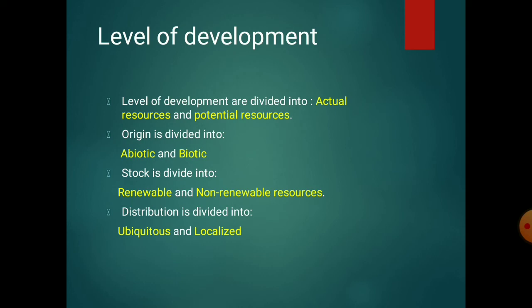On the basis of distribution, resources are divided into ubiquitous and localized. Ubiquitous means found everywhere — universally — for example, water, soil, and air. Localized means resources that can be found in that particular area only — like local anesthesia which affects only that particular part.